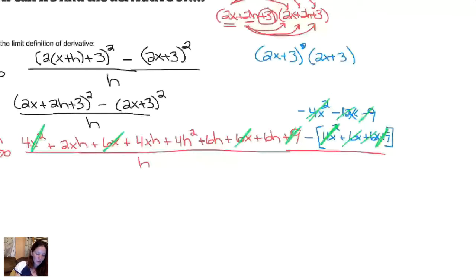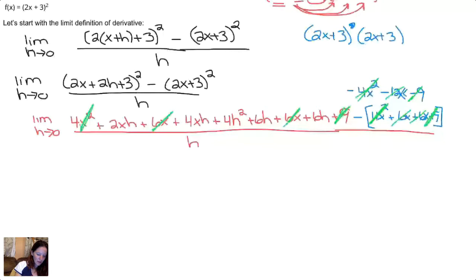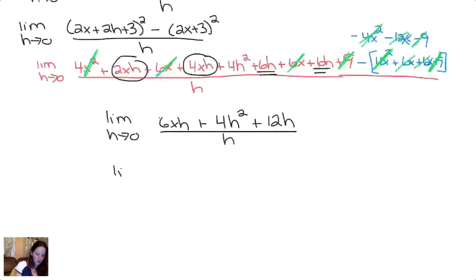We canceled a whole bunch of stuff — I think that's all that we can cancel. So let's see what we have left. We have the limit as h approaches 0. We have 8xh here and 4xh — wait, 2xh here and 4xh there, plus 4h squared, and then 6h and 6h. The next thing we want to do is get those h's to cancel. The first thing we usually do with a limit is plug in h equals 0, but you'd get 0 over 0, which means do more work.